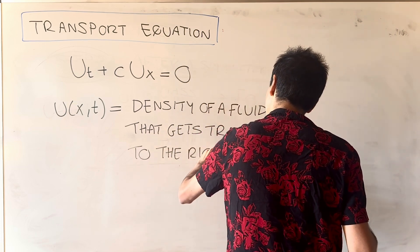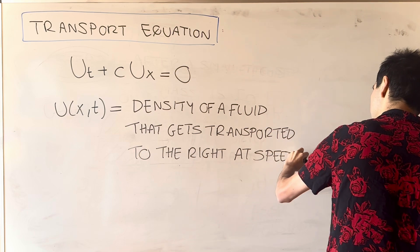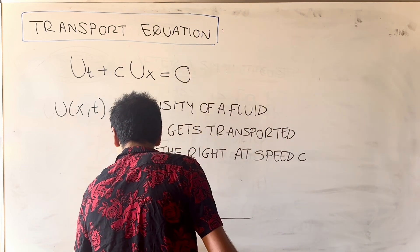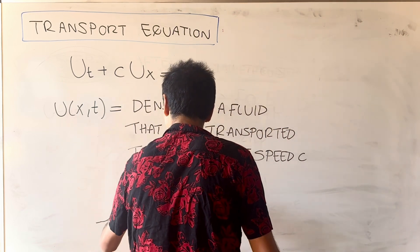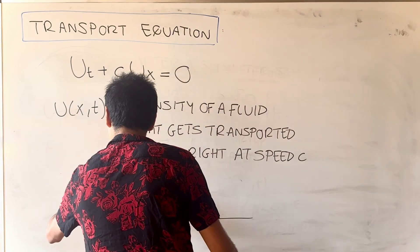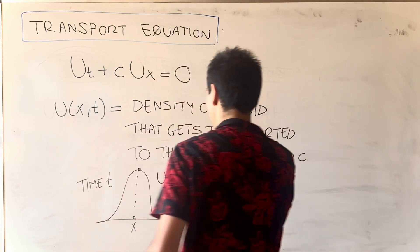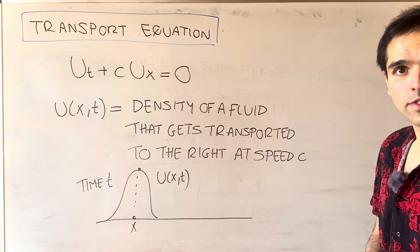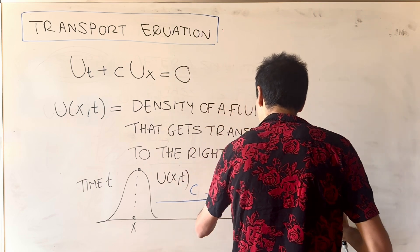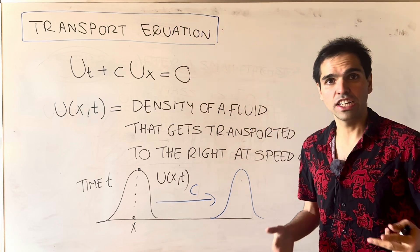Transported to the right at speed c. The idea is as follows: you might start with a blob — that's u of x,t at time t and position x. And what happens to this blob is it just gets transported to the right at speed c, and becomes this different blob here. So that's what the transport equation models.